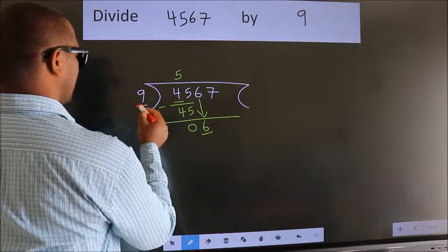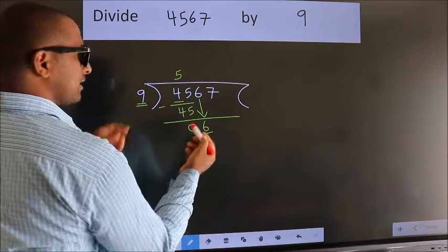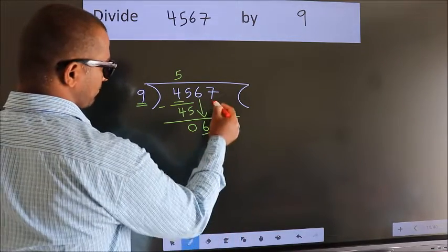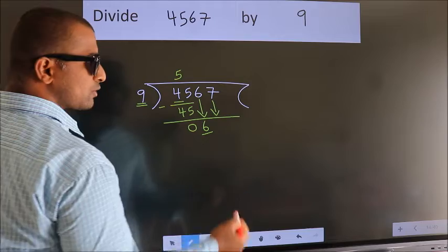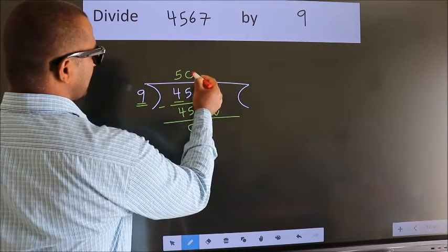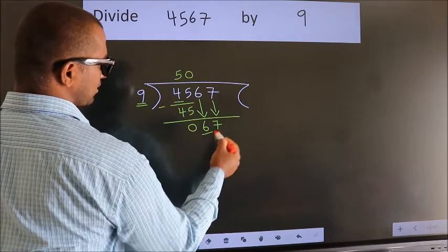Here we have 6. Here 9. 6 is smaller than 9, so we should bring down the second number. And the rule to bring down the second number is put 0 here. Then only we can bring down this number. So 67.